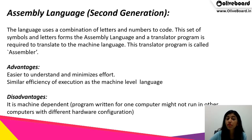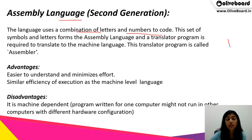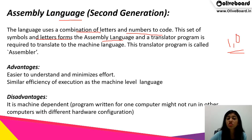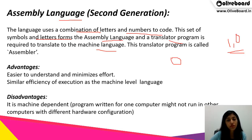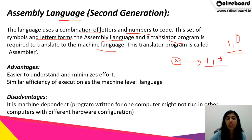The second type of language is assembly language. It uses a combination of letters and numbers to code — unlike machine language, it uses other words and numbers too. This set of symbols and letters forms the assembly language, and a translator program is required to translate it to machine language. This translator program is called an assembler.